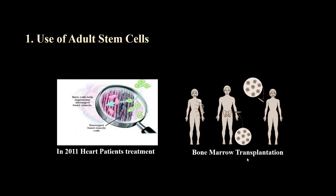We also use adult stem cells in the very popular bone marrow transplantation procedure. This procedure is mostly performed to treat lymphoma and leukemia — cancers in which white blood cells are affected in both their number and physiology. In this procedure, the blood-producing cells of the patient are first killed by radiation or toxins, because blood-producing cells are sensitive to both radiation and toxins.